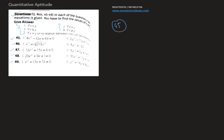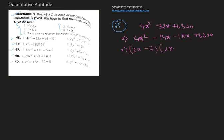Starting with problem number 45, we have the first equation: 4x² − 32x + 63 = 0. Factorizing this quadratic equation, we get 4x² − 14x − 18x + 63 = 0, which gives us (2x − 7)(2x − 9) = 0.